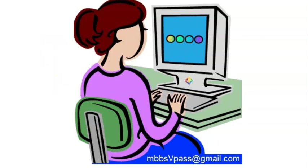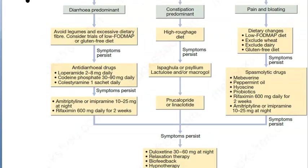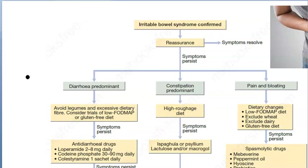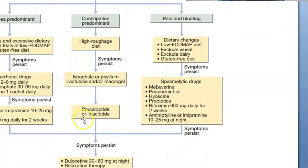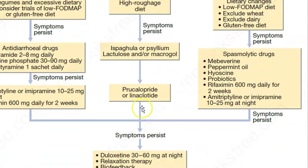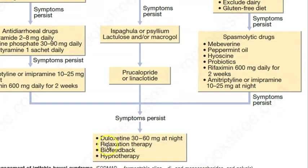For constipation-predominant IBS, suggest a high-roughage diet first. If symptoms persist, you can give ispaghula husk, lactulose, or macrogol. Drugs specifically used include prucalopride and linaclotide.